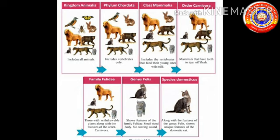Order Carnivora includes mammals that have teeth to tear flesh. Family Felidae includes those with retractable claws, along with the features of the order Carnivora. Genus Felis shows features of the family Felidae — small-sized body and no roaring sound.